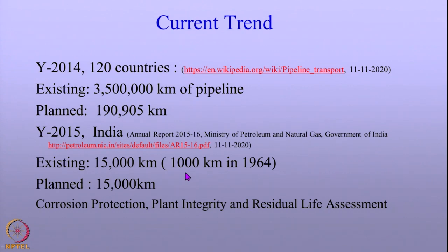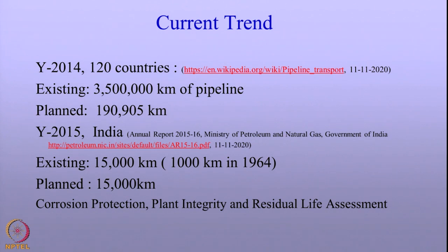With respect to India, in the year 2015, looking at the annual report of 2015-16 by the Ministry of Petroleum and Natural Gas, Government of India, the existing pipeline is about 15,000 kilometers — a 15 times increase compared to what we had in 1964. Currently, the government is planning to implement another 15,000 kilometers of pipelines. Interestingly, the report also talks about corrosion protection, pipeline integrity, and residual life assessment, meaning corrosion of buried pipelines is considered very important so that they serve without failures. So the pipelines and buried structures are very important.